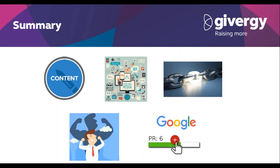To recap: we build fresh, unique content on our blog. We syndicate to various social channels and that goes down well. People start linking and sharing the content, which basically builds authority and Google responds by giving us a stronger ranking. It's really that easy.